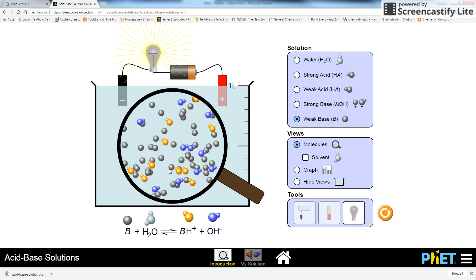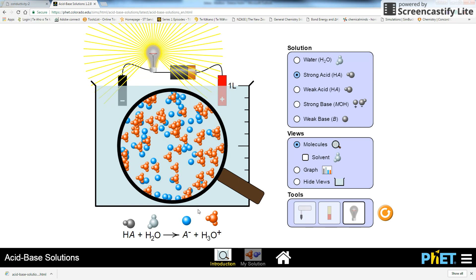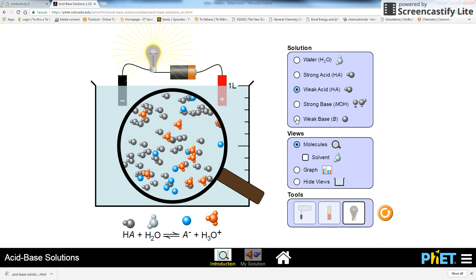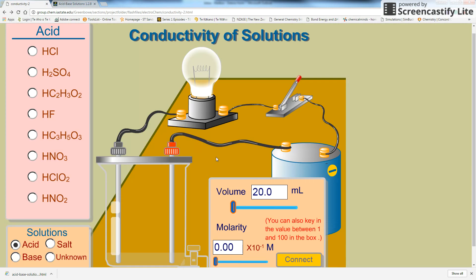Now, strong acids and strong bases dissociate completely. So if I click onto here, you can see this arrow, it dissociates completely, and that's why you have lots of ions present. Whereas weak acid and weak base, they don't have very many ions present because they only partially dissociate.